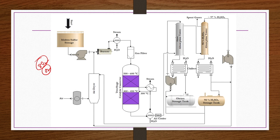Now we see the contact process by a flow chart. For the contact process, SO2 and oxygen are the primary raw materials, fed to a catalytic converter. The gases must be dry enough; if not, they are dried and mixed before being sent to the catalytic converter. The feed mixture should have 7 to 10 percent SO2 and 11 to 14 percent O2.